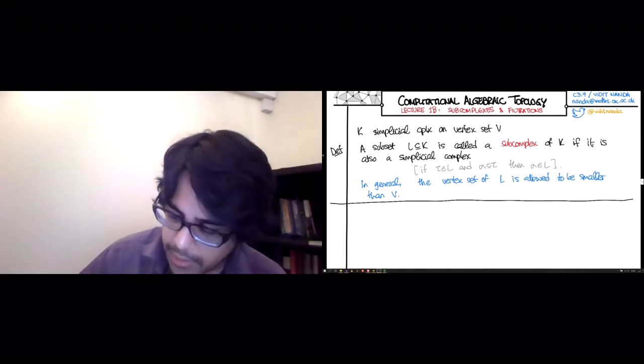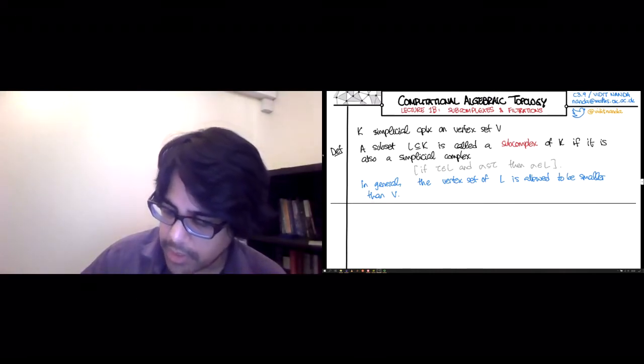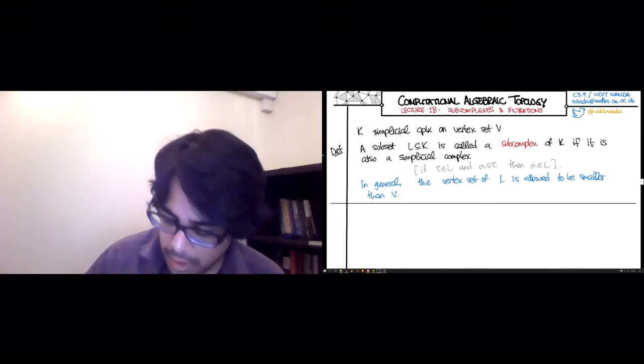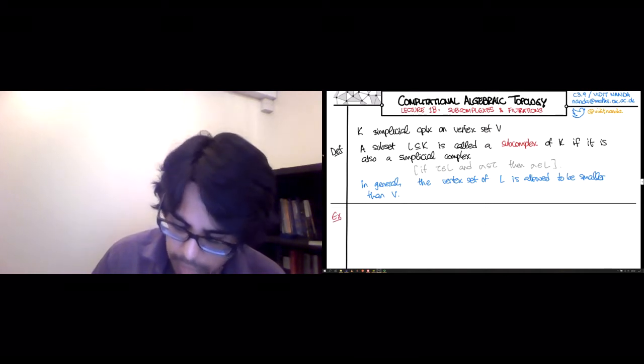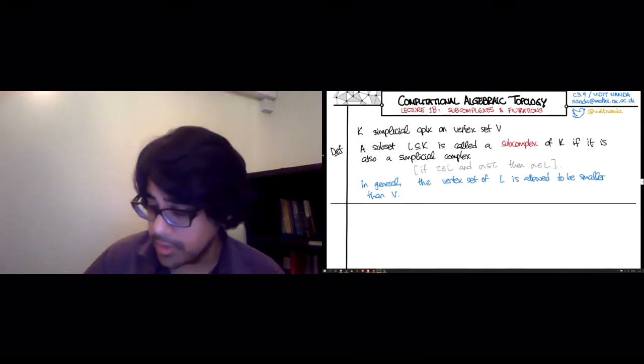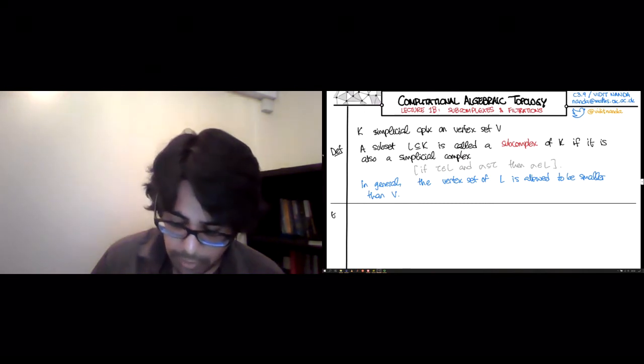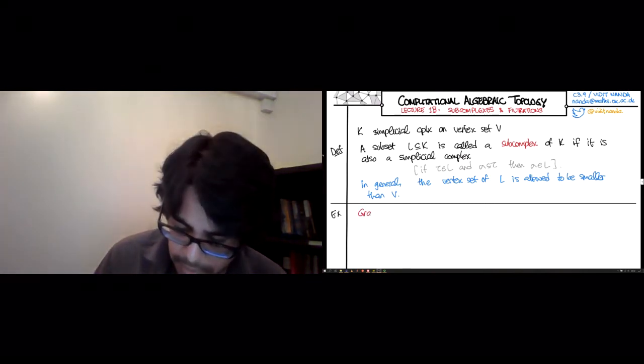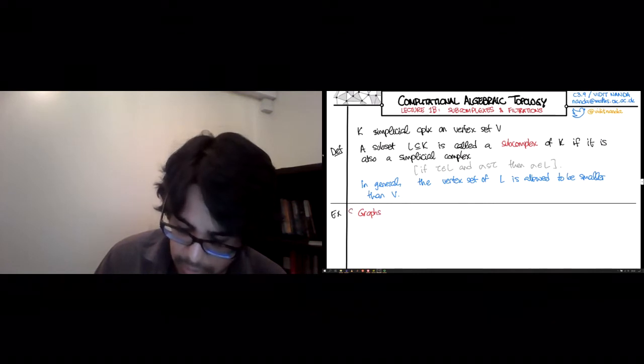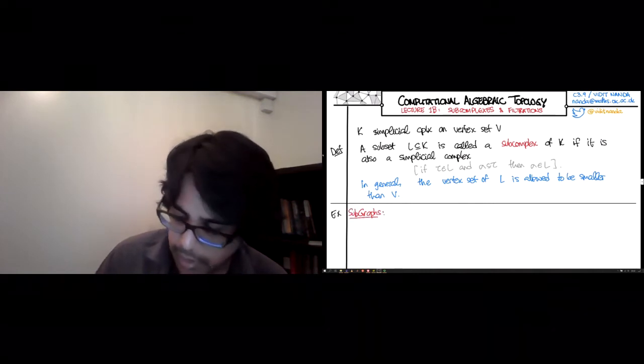The best way to understand this, or any other definition, is to take a look at several examples. So the first family of interesting examples that you can get is just from looking at graphs, which are the most familiar simplicial complexes. So subgraphs of a given graph.